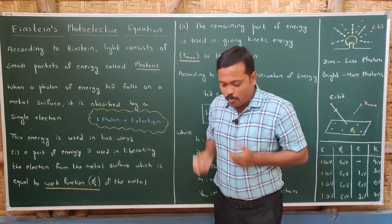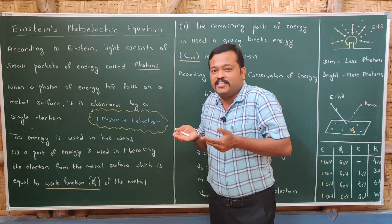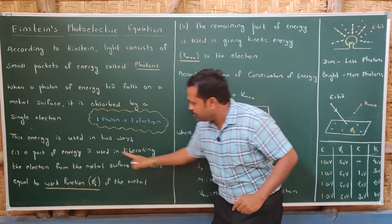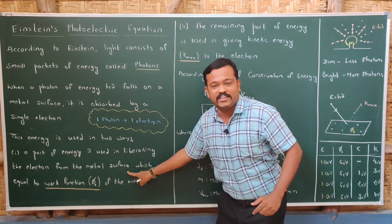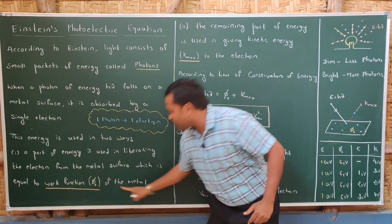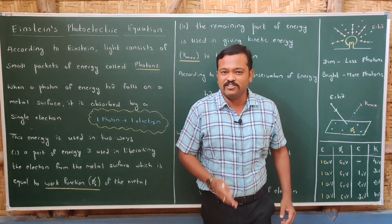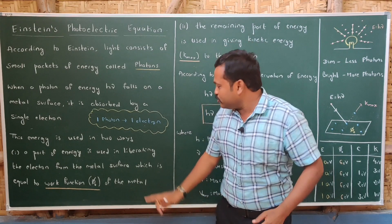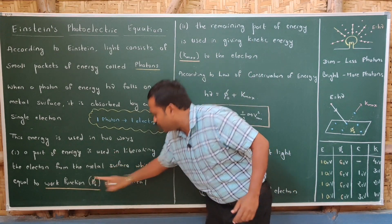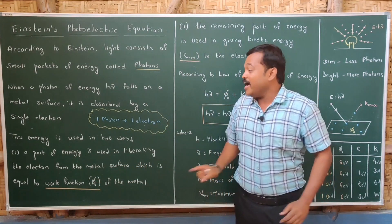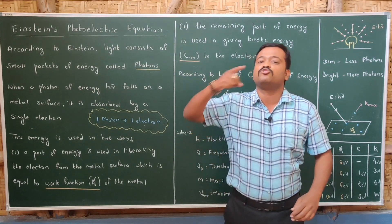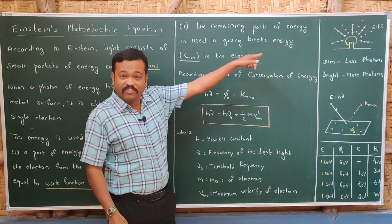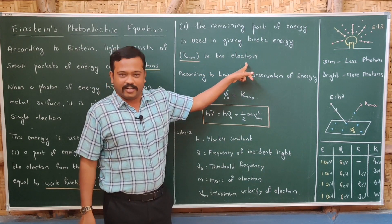The energy absorbed by a single electron is used in two ways. One: to come out of the metal. The second: to move forward. A part of energy is used in liberating the electron from the metal surface, which is equal to the work function of the metal — the minimum energy required for the electron to come out. The remaining part of the energy is used in giving kinetic energy to the electron.